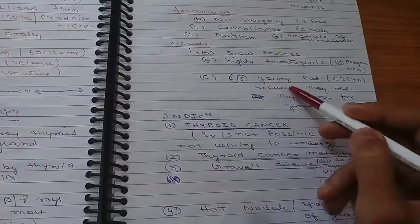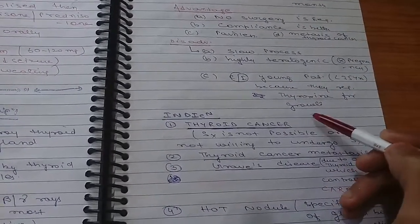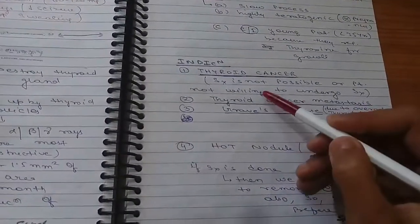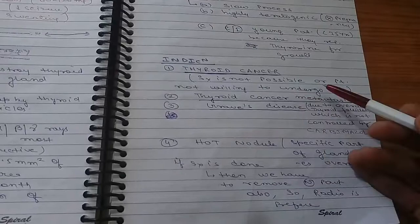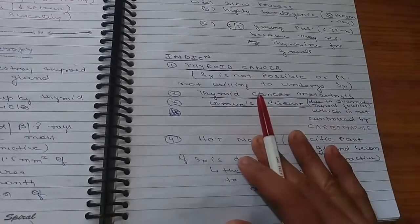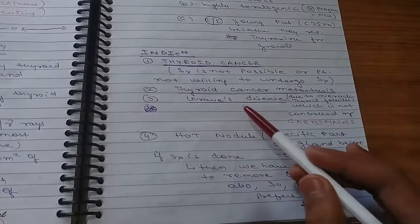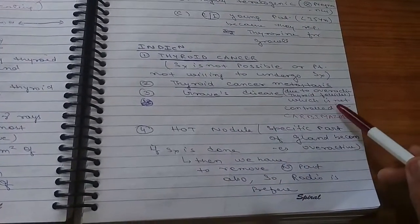Disadvantages: it is a slow process, highly teratogenic, so contraindicated in pregnancy. It is contraindicated in young patients because they require thyroxine for growth. Indication: first is thyroid cancer when surgery is not possible or patient is not willing to undergo surgery. You can use radiotherapy.